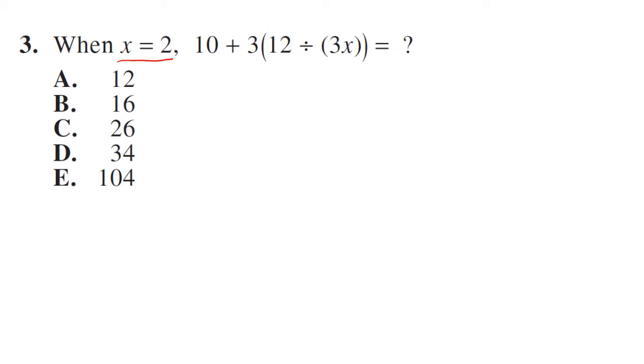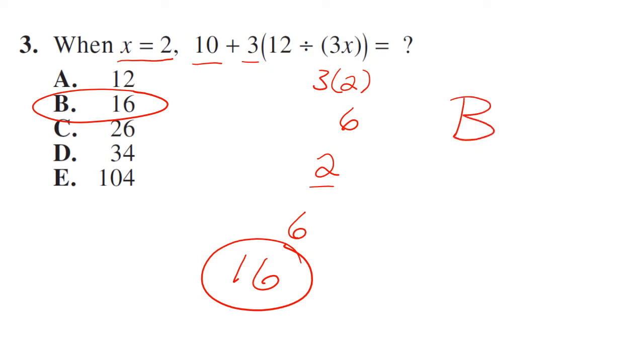When x equals 2, what does this equal? So we have 10 plus 3 times 12 divided by 3 times 2, so that's 6. So 12 divided by 6 is 2, so 3 times 2 is 6 plus 10 is 16. So that's just knowing PEMDAS order of operations. So your answer is B.